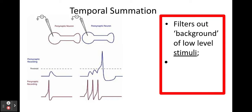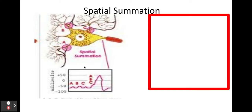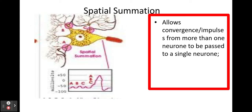The next one is spatial summation. This is where I have several presynaptic membranes going into one postsynaptic membrane. And this allows convergence where I've got impulses from more than one neuron to be passed into a single neuron. As you can see here, if I have A, B and C triggering at different times I'm not going to get enough neurotransmitter to be released to trigger an action potential in my postsynaptic membrane.